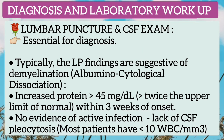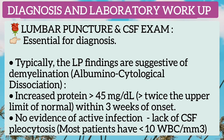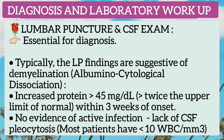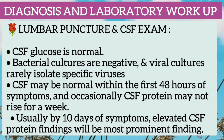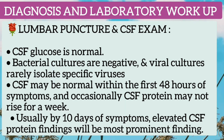Lumbar puncture and CSF examination are essential for diagnosis. The LP findings are suggestive of demyelination — that is, albuminocytologic dissociation. There is increased protein, more than twice the upper limit of normal, within 3 weeks of onset. There is no evidence of active infection, meaning lack of CSF pleocytosis; most patients have fewer than 10 WBCs per cubic millimeter. CSF glucose is normal, blood cultures are negative, and viral cultures rarely isolate specific viruses. CSF may be normal within the first 48 hours, and protein may not rise for a week; by 10 days, elevated CSF protein is the most prominent finding.